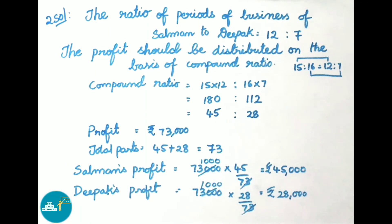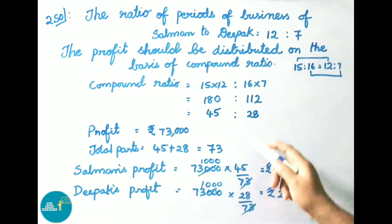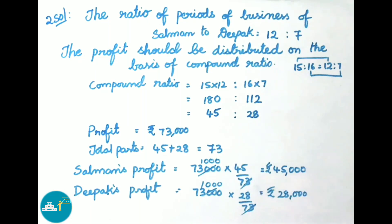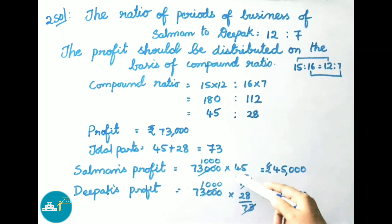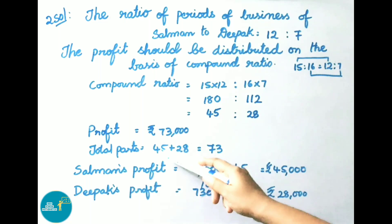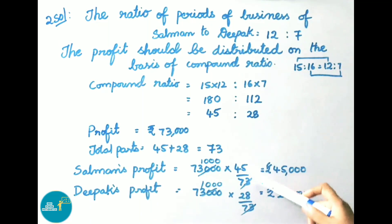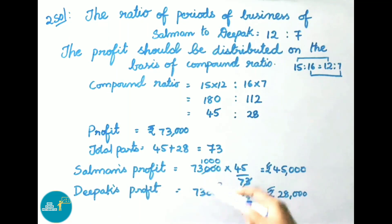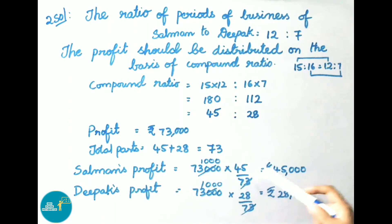They have given profit as 73,000 rupees. Total parts equals compound ratio 45 plus 28, that equals 73. Salman's profit equals total profit 73,000 into 45 by 73. Since 73 times 1,000 is 73,000, multiply 1,000 into 45, that is 45,000 rupees. Therefore, Salman's profit is 45,000 rupees.